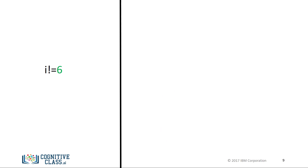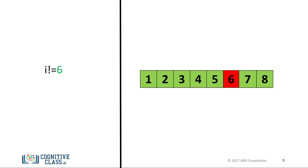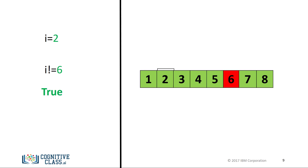The inequality test uses an exclamation mark preceding the equal sign. If two operands are not equal, then the condition becomes true. We can use a number line. When the condition is true, the corresponding numbers are marked in green, and red for where the condition is false. If we set i equal to 2, the operator is true, as 2 is not equal to 6.